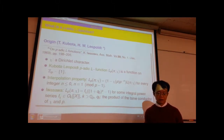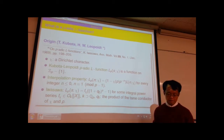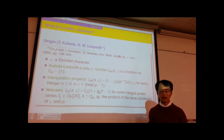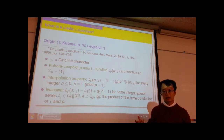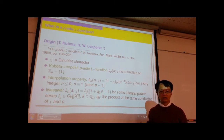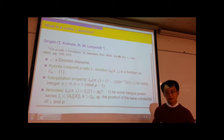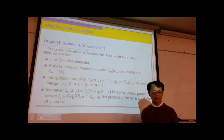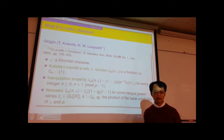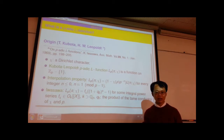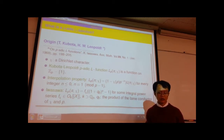So first, what is a p-adic L-function? The most classical example is the Kubota-Leopoldt p-adic L-function, which appeared historically first. For them, a p-adic L-function was a p-adically analytic function which interpolates — meaning it is equal, more or less — to the special values of Dirichlet L-functions.